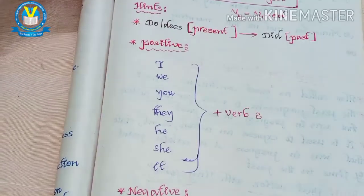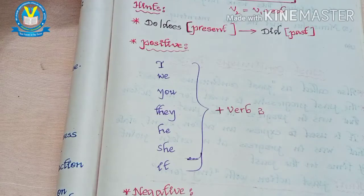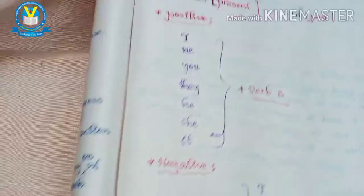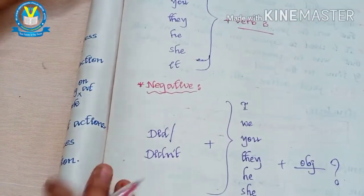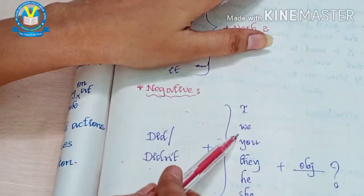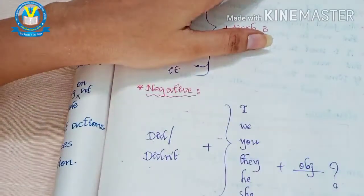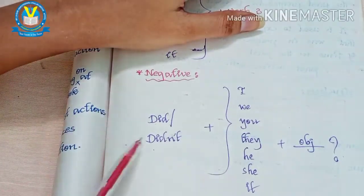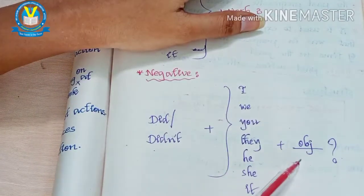For all pronouns — I, you, they, he, she, it — we use Verb 2 in simple past tense. While writing the negative, we use 'did not' for all pronouns: I, you, they, he, she, it, plus object. In the question format, the helping verb 'did' comes first, followed by the subject and finally the object.